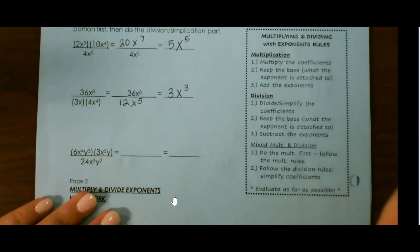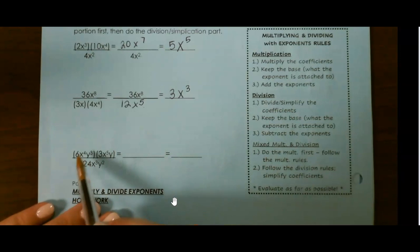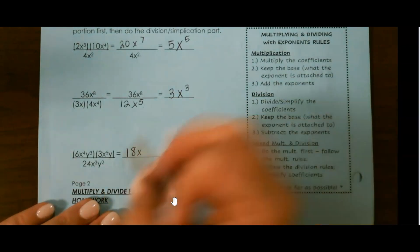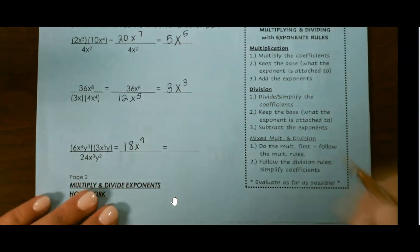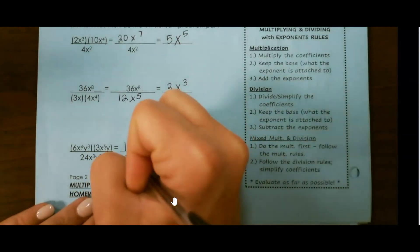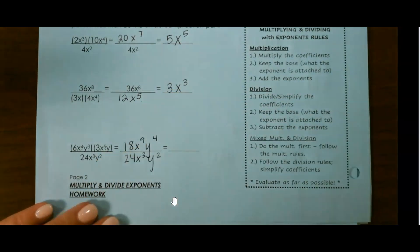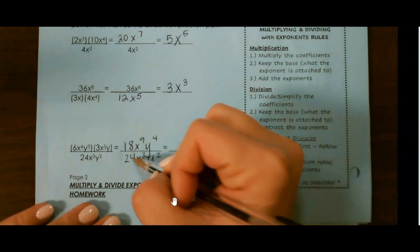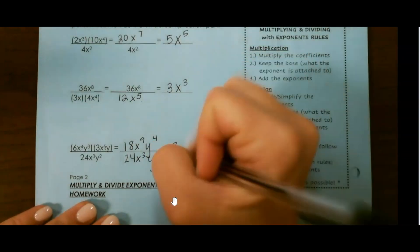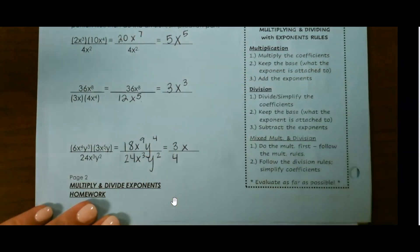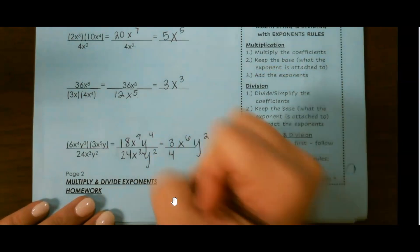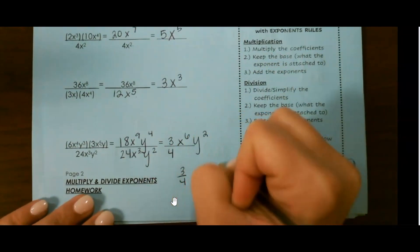For our last one, we have a lot going on. On the top, we do 6 times 3, which is 18. Keep our first base, which is x, and then 4 plus 5, which is 9. Our next base is y, so that's 3 plus 1, which is 4. On the bottom, we have 24, x to the 3rd, y to the 2nd. Then 18 over 24 — we simplify this like a fraction, dividing both by 6, which gives us 3 over 4. And then x to the 9 minus 3 is x to the 6th, and y to the 4 minus 2 is y squared. You can also see this written another way as well.